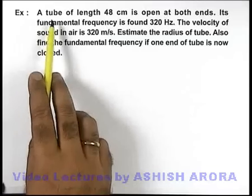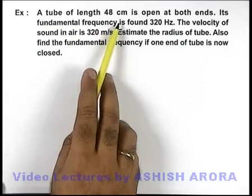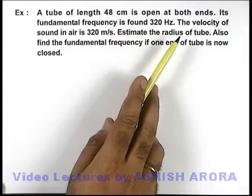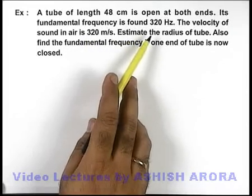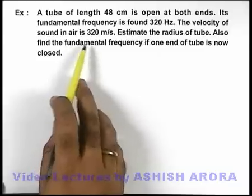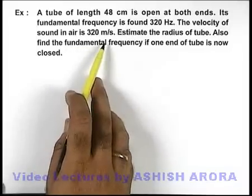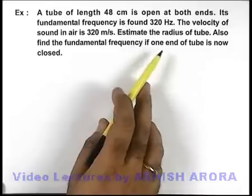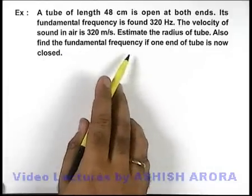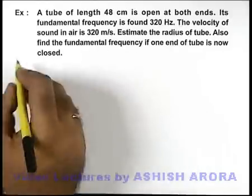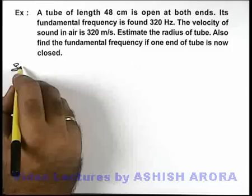In this example, we are given a tube of length 48 centimeters open at both ends. Its fundamental frequency is found to be 320 Hz, and the velocity of sound in air is 320 meters per second. We are required to estimate the radius of the tube and also find the fundamental frequency if one end of the tube is now closed.